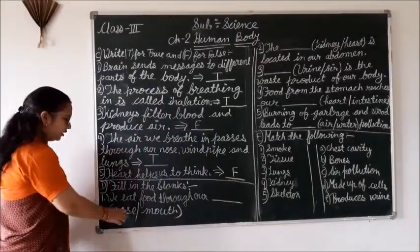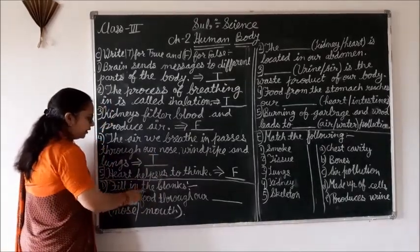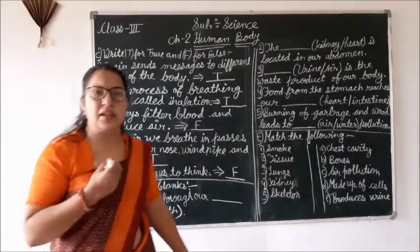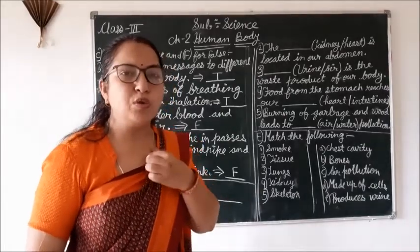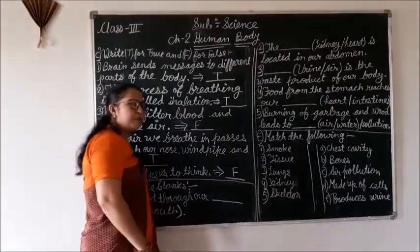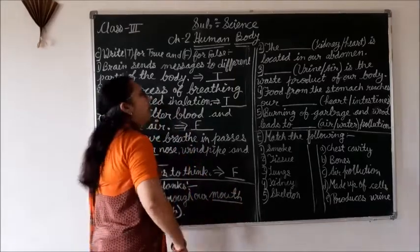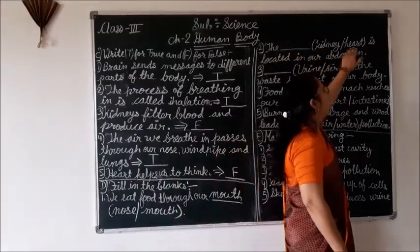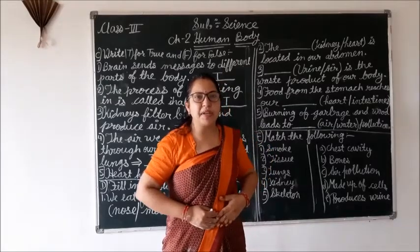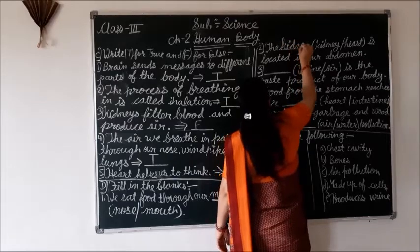Next, choose the correct answer. We have to choose one from two options and fill in the blanks. We eat food through our mouth. Kidney and heart — which is located in our abdomen? Heart is in the chest cavity, so the answer is kidney. K-I-D-N-E-Y, kidney.